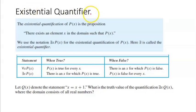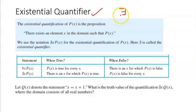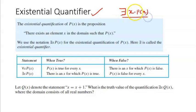Let us talk about the existential quantifier. The existential quantifier is represented as 'there exists.' So if I write 'there exists x, p(x),' how do you read it? You read it as: there exists an element x in the domain such that p(x). Or simply: there exists x such that p(x).